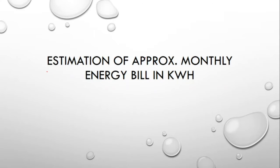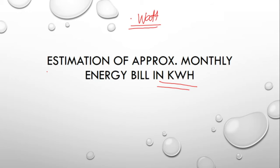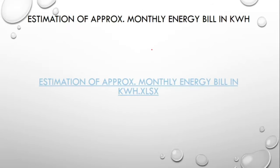In this session we are going to talk about estimation of the approximate monthly energy bill in terms of kilowatt hour. In the earlier session we discussed the various home appliances generally used in the residential sector and the watt capacity of those instruments. Now we will calculate the approximate monthly electricity bill by considering the number of appliances used in the corresponding home sector.